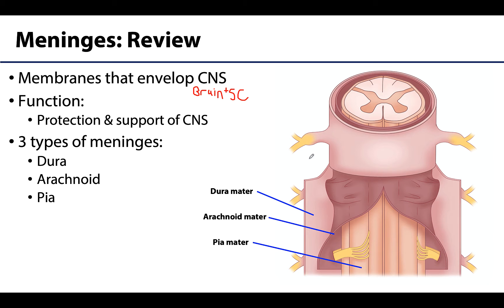There are three meninges: the tough or thick external fibrous layer — the dura mater; the thin intermediate layer, which is the arachnoid mater; and then the thin but delicate internal vascularized layer, which is the pia mater — going from superficial to deep. The arachnoid and the pia mater are actually continuous, and when discussing them together you often hear the term leptomeninges.